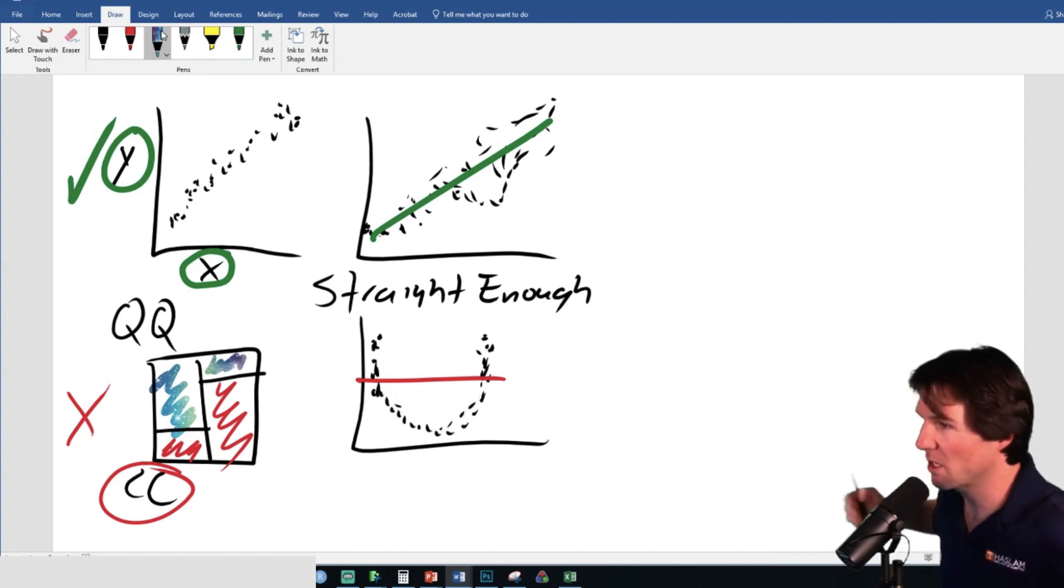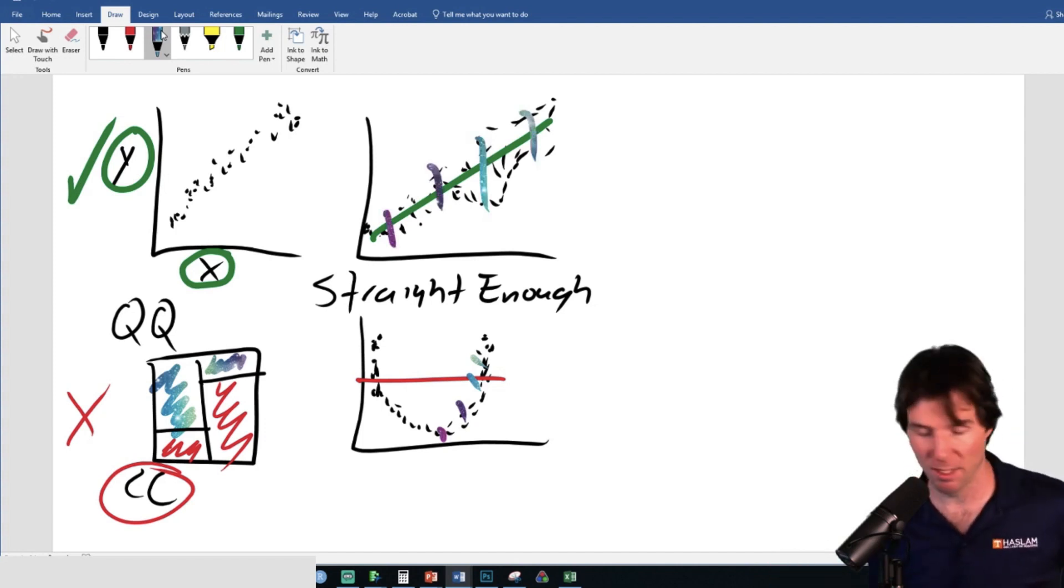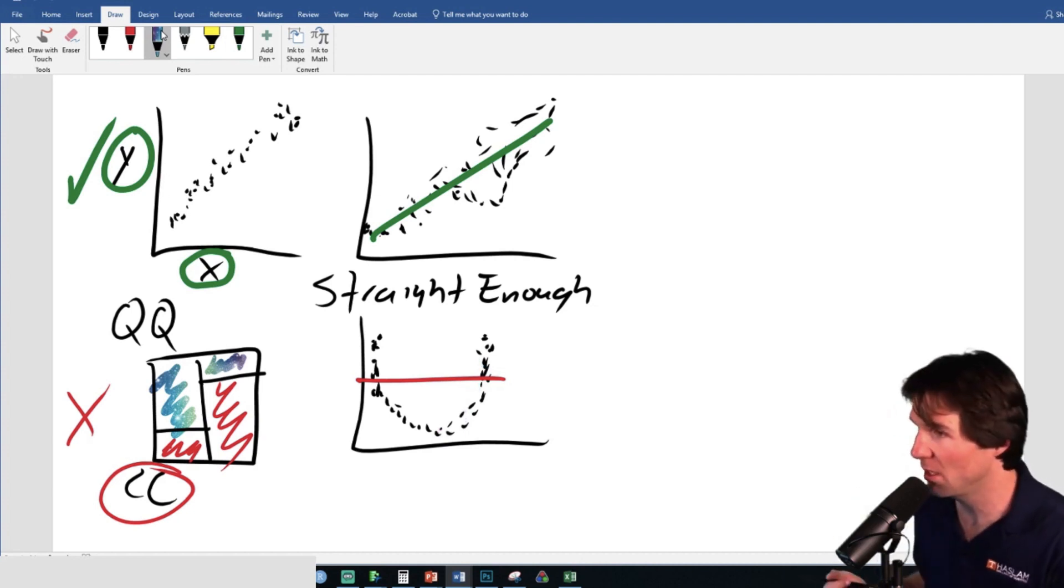Julio's right there. So the form is nonlinear. It's still strong from the vertical scatter. It's actually stronger than the top one. The top one is actually weaker than the bottom one, but the top one has a higher correlation because correlation measures linear strength. So QQ, straight enough, no outliers.